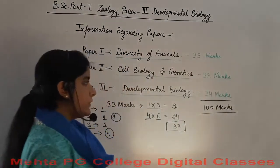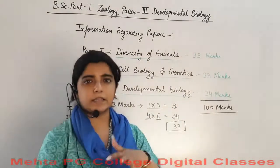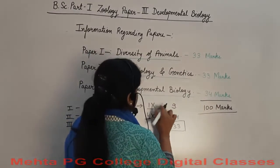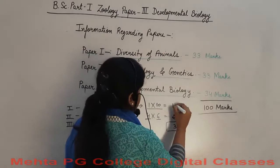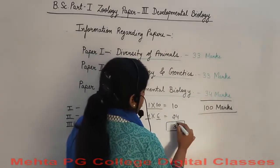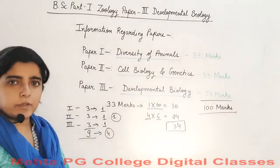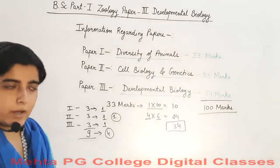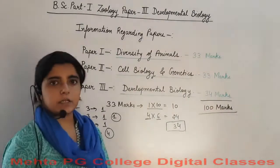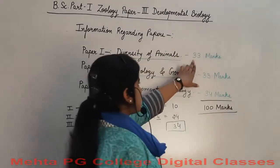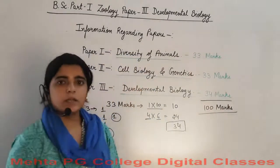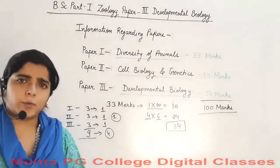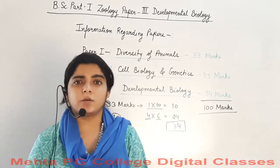The paper pattern of 34 marks is not much different. It will contain 10 short questions of 1 mark each. The total examination is 100 marks for theory, and the remaining 50 marks is for practicals, which we will discuss later.